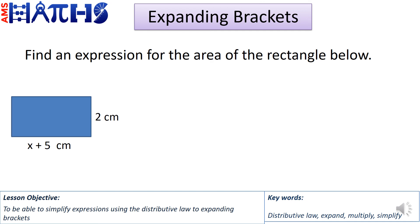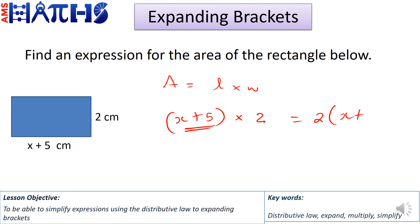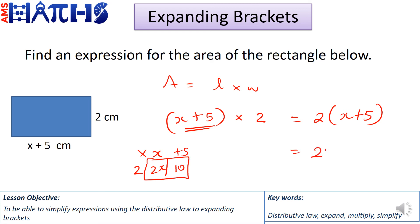Here's another question: find an expression for the area of the rectangle. The area of a rectangle is length times width. Here the length is x plus 5 and the width is 2, so we need to multiply 2 by the entire length: 2 times bracket x plus 5. Expanding: we split x plus 5 above two boxes with 2 in front. So 2 times x is 2x, and 2 times 5 is 10. The expression for the area is 2x plus 10.